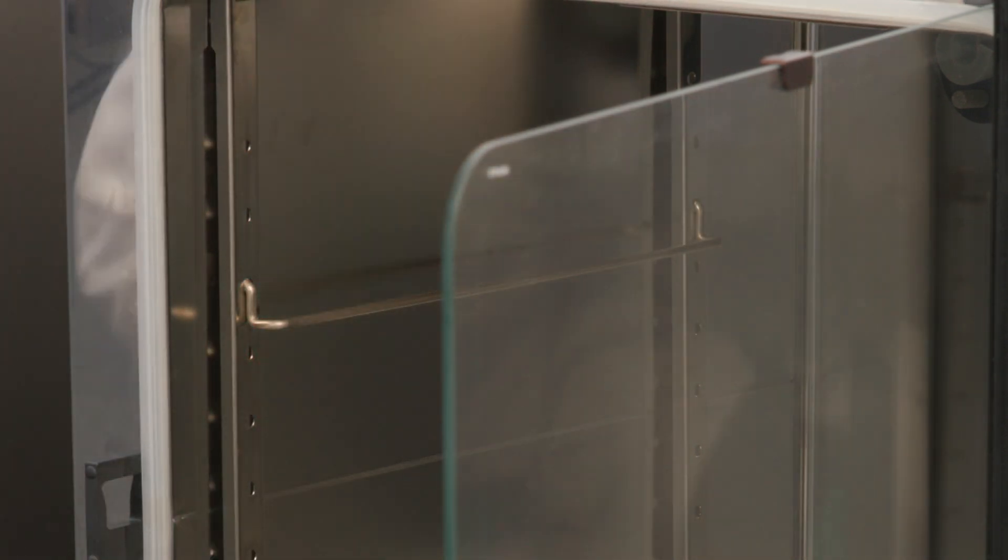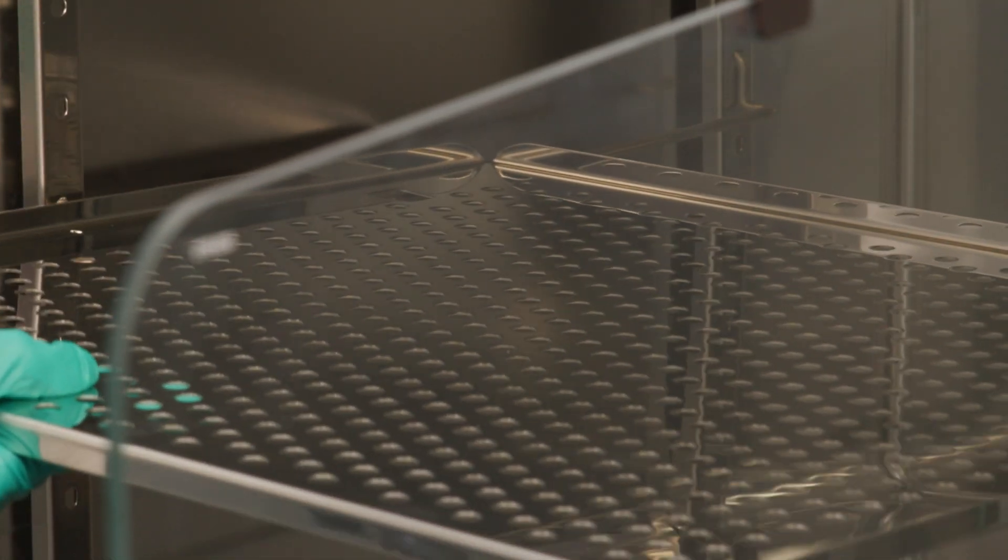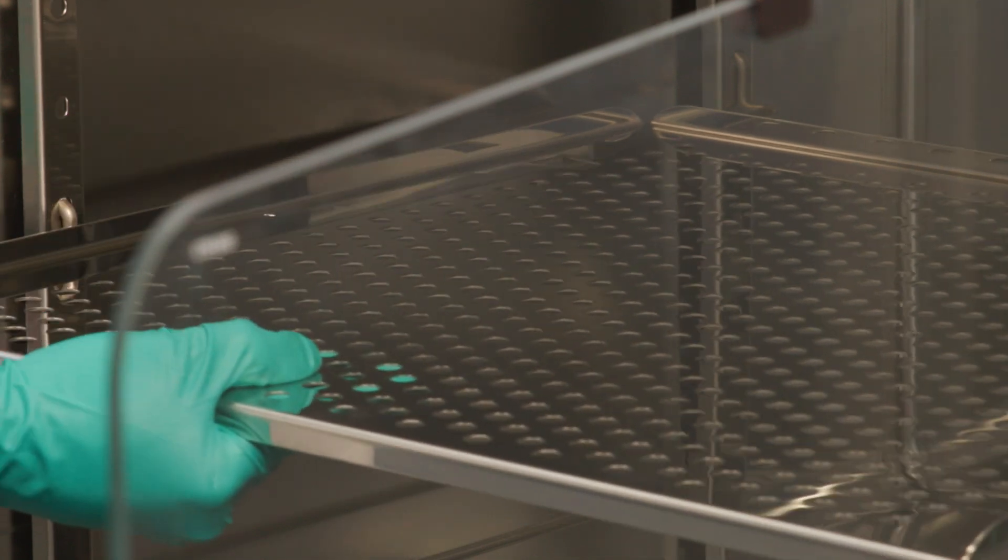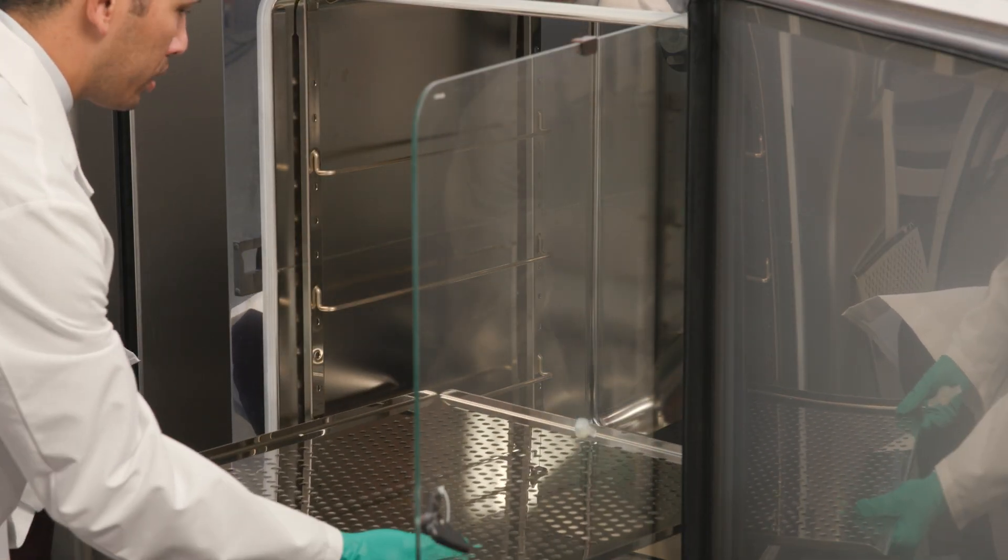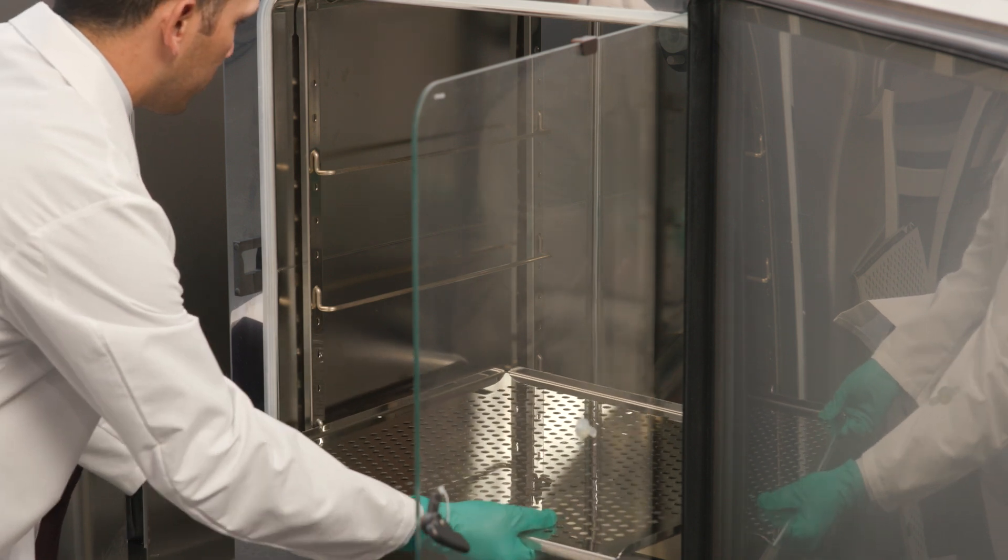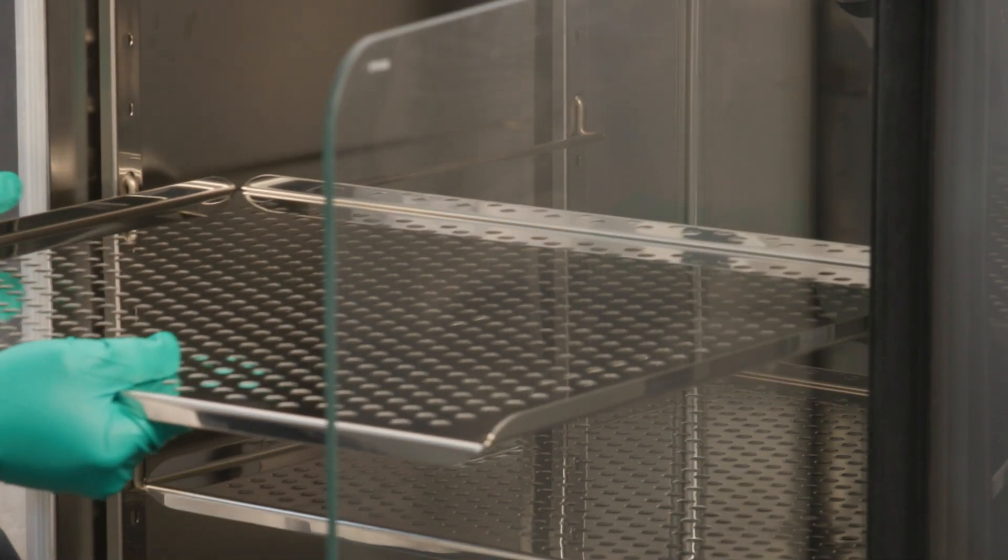To install the shelves, slide the shelf with the tilt protection device onto the shelf support. The tilt protection is also used as a guide for the shelf. Then, slightly raise the shelf so that the withdrawal stop can be routed over the shelf supports. Finally, make sure that the shelf support is positioned in the two tilt protections in a way that allows it to move freely.